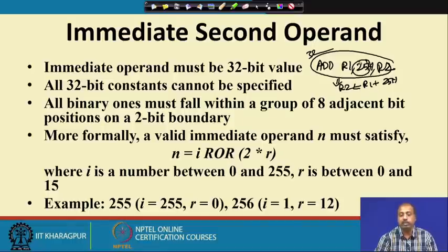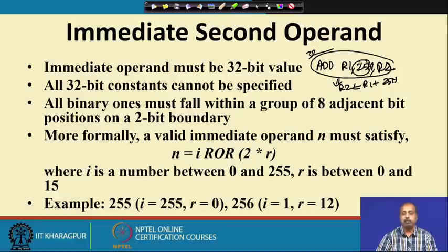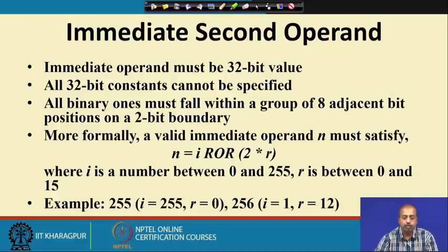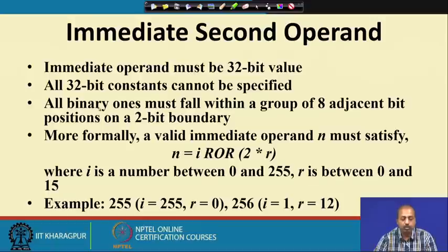You cannot naturally represent all numbers in this 32-bit immediate field. What ARM has done is they have allowed only a certain category of 32-bit numbers that can be used as the second operand. All 32-bit constants cannot be specified. The numbers which are allowed are those whose binary ones all fall within a group of 8 adjacent bit positions on a 2-bit boundary.